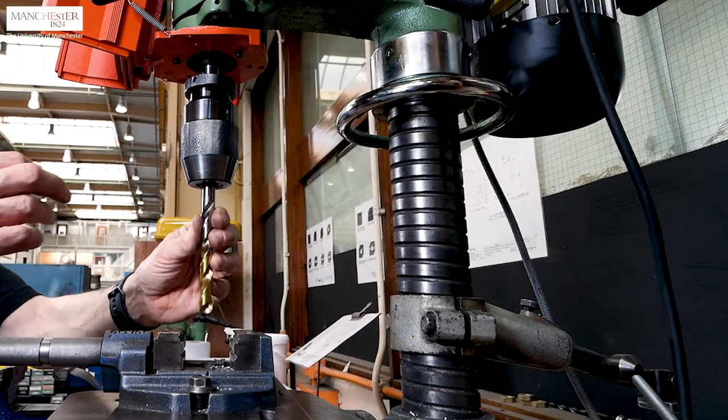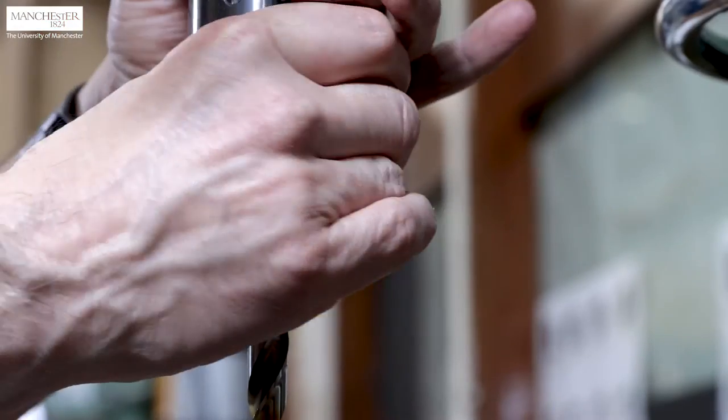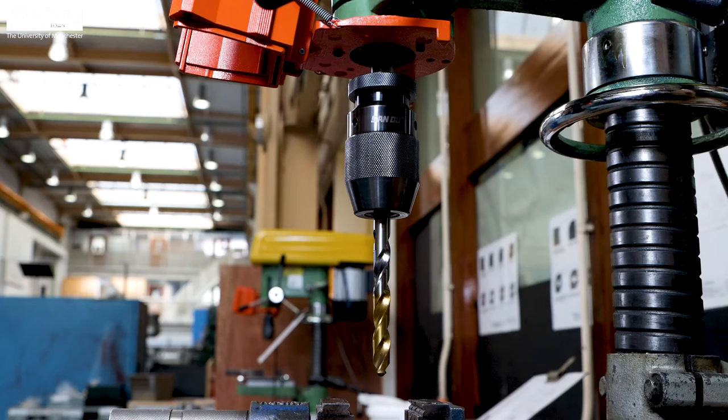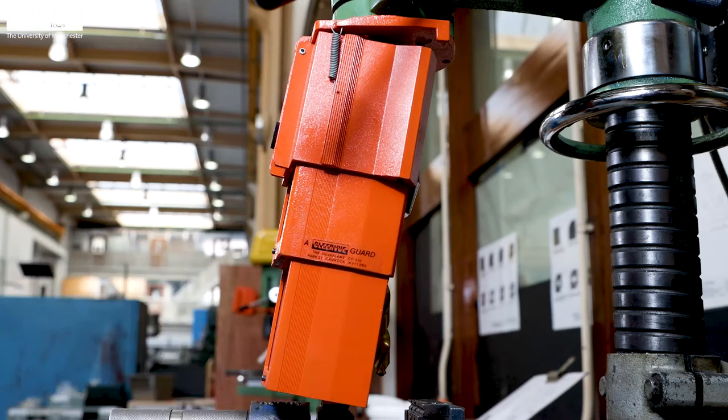Now, install the 13mm drill bit to the drilling chuck by manually twisting the outer rim. For increased safety from metal chips, swarf, and broken tools, we used the guard prior to drilling.